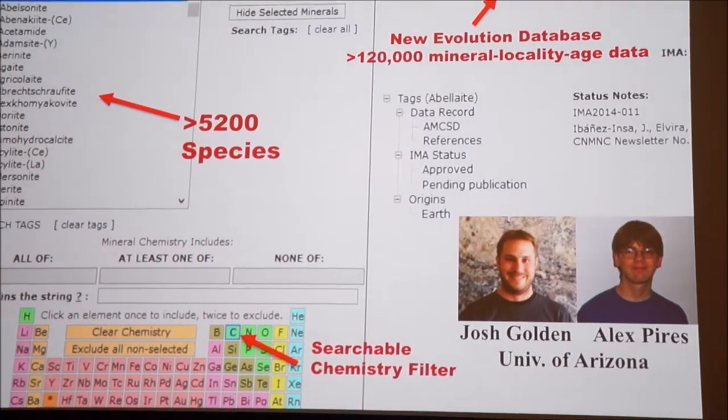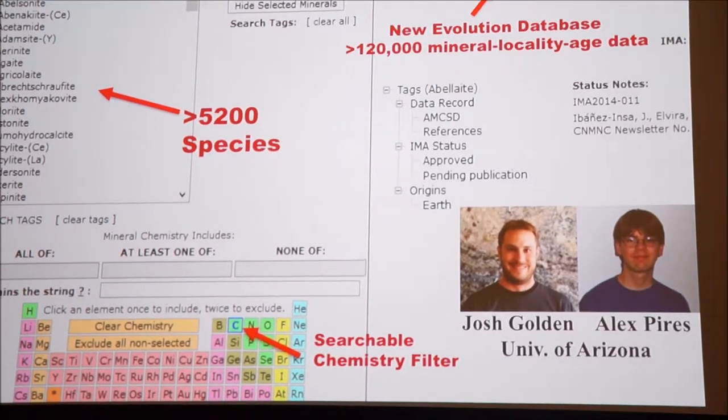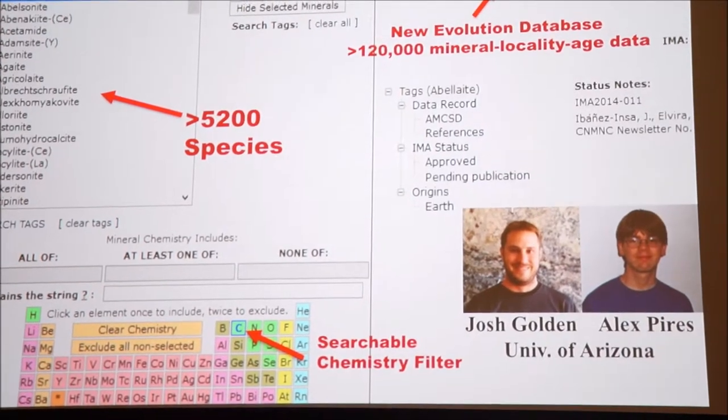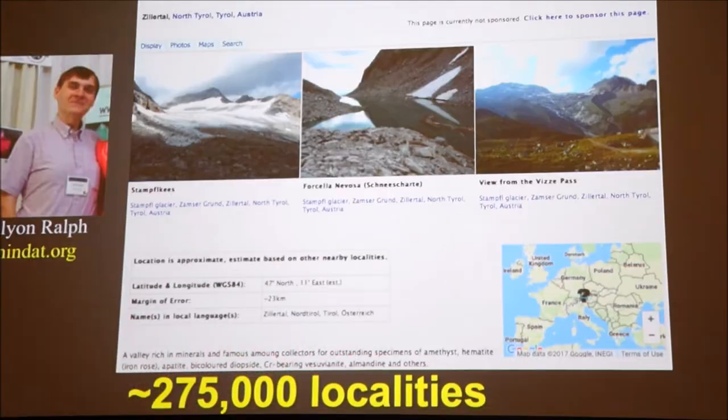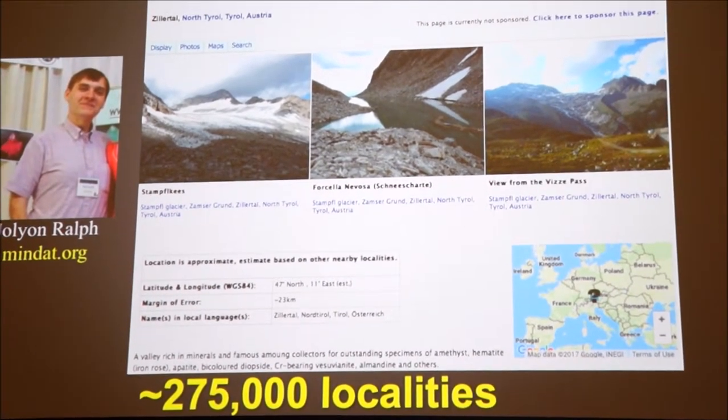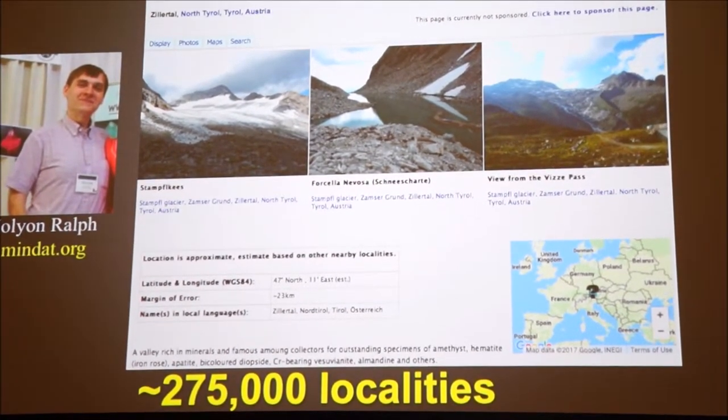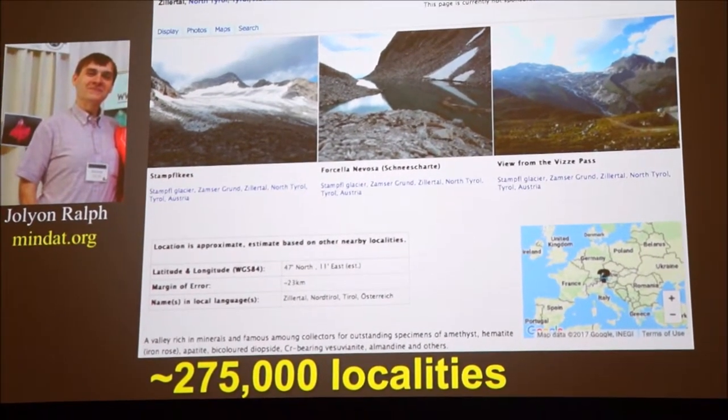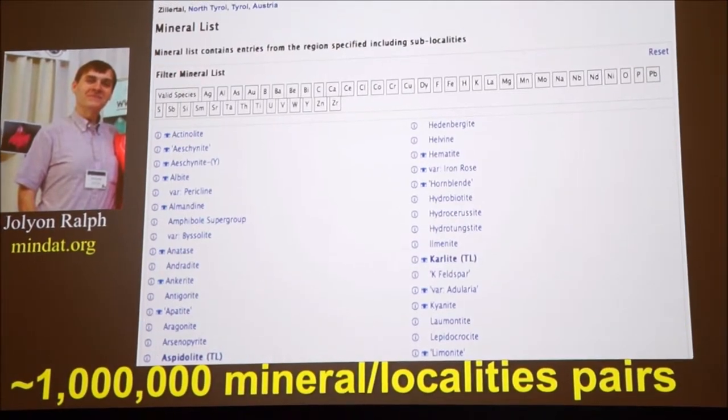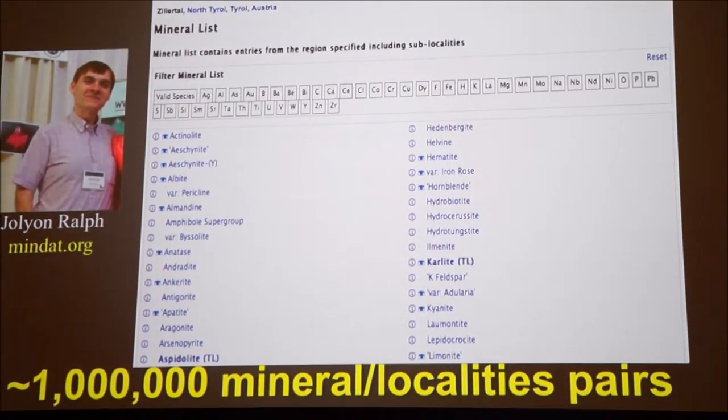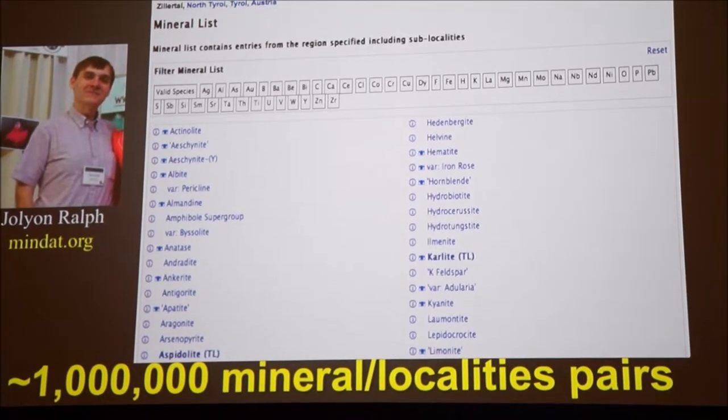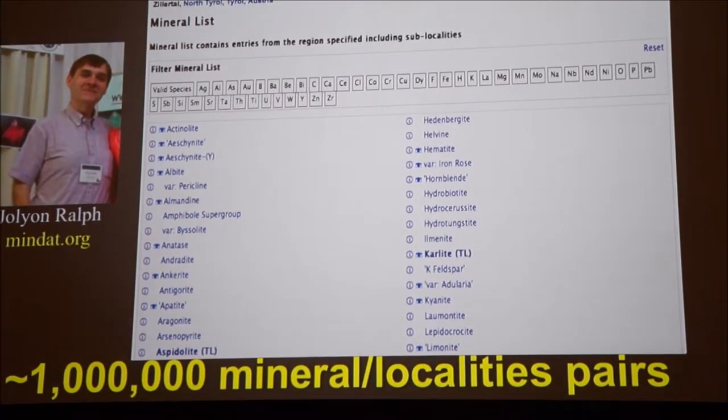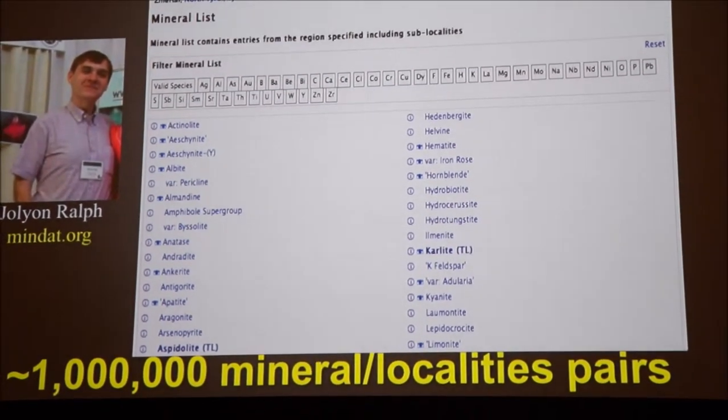We've also been building an evolution database. This has been a brute force effort for the last eight years by hand entering the ages and localities of different minerals. We're up to 120,000 data points. It's also very important to understand your localities. The crowd-sourced data resource, Mindat.org, has now listed something close to 300,000 localities, and in each of those localities it lists the minerals. There's something over a million mineral locality pairs now. It's certainly not big data in the sense of some other fields, but for mineralogy we're finally getting to the point that we have enough data to do statistical analysis.